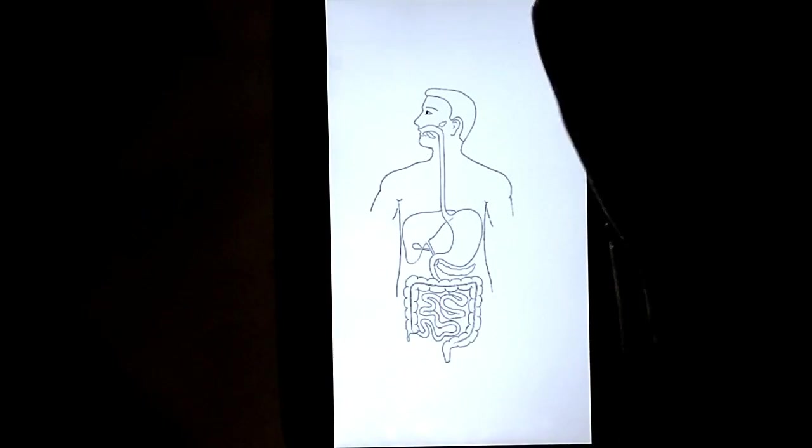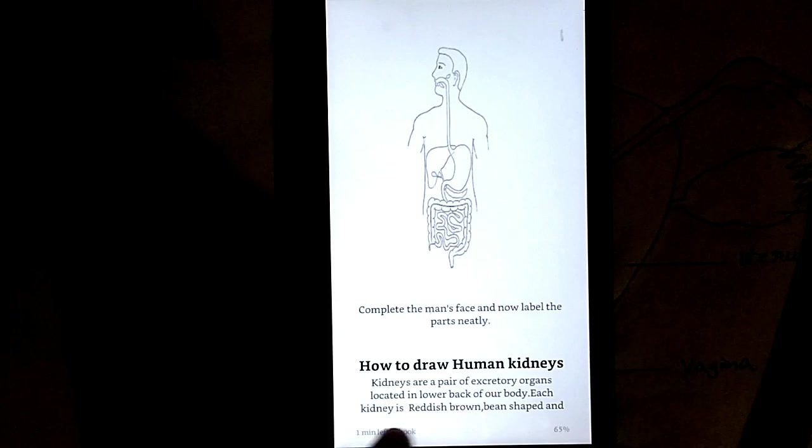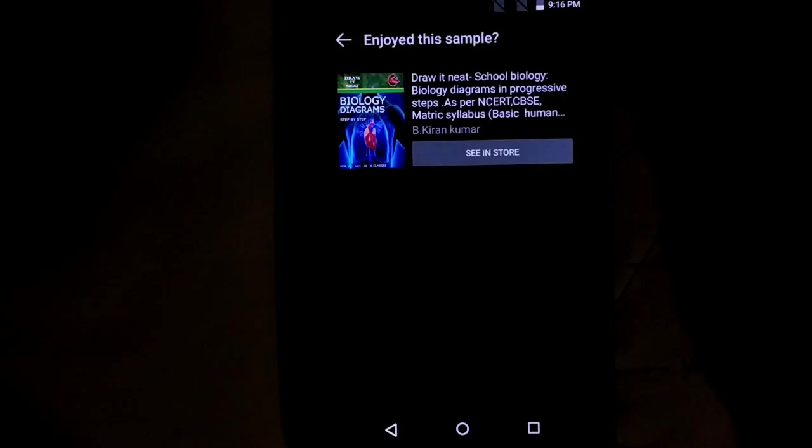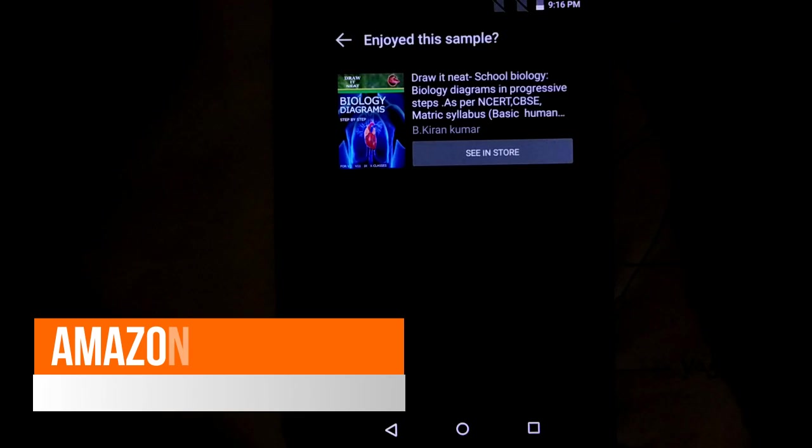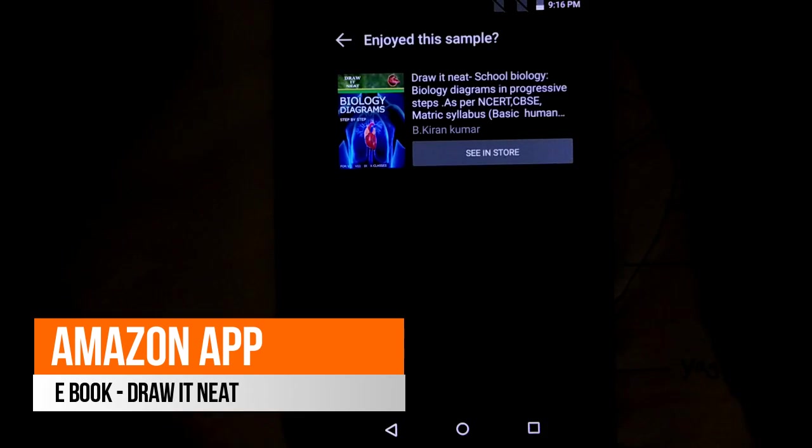So friends, not only the human digestive system, but also how to draw human kidneys. Friends, you can download this wonderful ebook from the Amazon website or Amazon app, and you too can learn the diagrams and score good marks. All the best, take care.